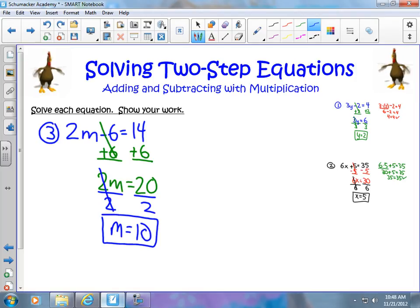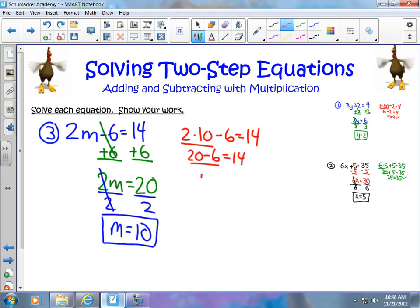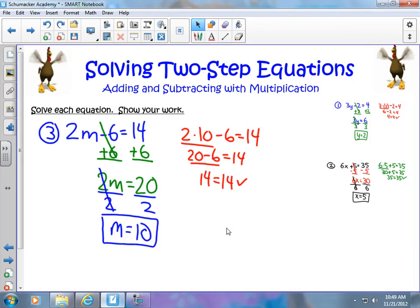Again, I can go ahead and check my work. I can say that 2 times the 10 minus 6 should get me 14. Let's find out. 2 times 10 is 20, minus 6 should get me 14. It does, in fact, get me 14. Therefore, my answer is correct.